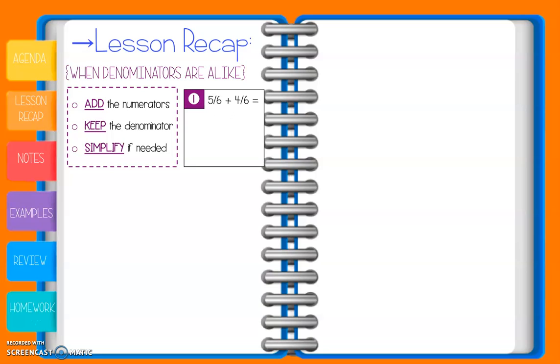Take a look at this example, we have 5/6 plus 4/6. We're going to add those numerators, 5 plus 4 is 9, they both have a denominator of 6, so we just keep that denominator, we get 9/6. Now, we can't stop there, because 9/6 is an improper fraction, so we have to turn that into our mixed number. 6 goes into 9 one full time with 3/6 left over, but again, we can't stop there because 3/6 can be simplified to 1/2. So our final answer is 1 and 1/2.